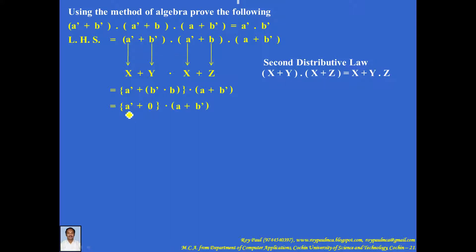Now a' plus 0. By properties of 0, it is a' into the remaining part as it is. Here you can open the bracket using the first distributive law: a' into a plus a' into b'. So you can write a'·a plus a'·b'.